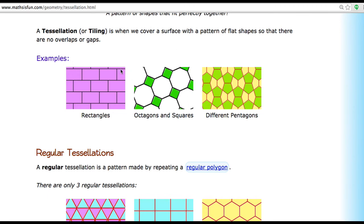So here are some examples of a brick wall where they use rectangles. Octagons and squares. Notice you have these octagons here and squares are filling up those gaps between the octagons. Different types of pentagons. These are all five sides each and they have different colors.